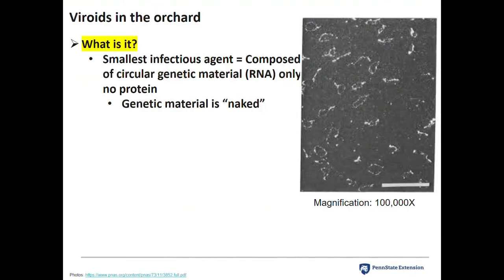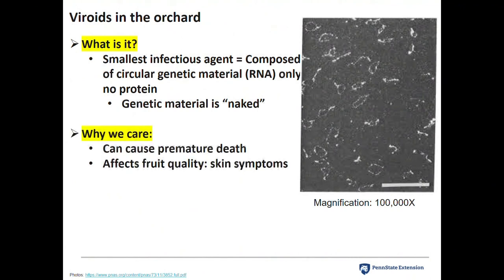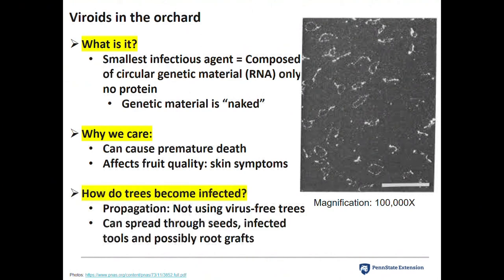Viroids are very similar to viruses, with the exception that they don't have protein — they're naked, just genetic material. They're RNA, and they're incredibly tiny. Why we care: despite their size, they pack an enormous punch. They can cause premature fruit death and seriously affect fruit quality. Trees become infected through propagation — unwittingly propagating from infected stock — and they can spread through seeds, infected tools, and possibly root grafts as well.